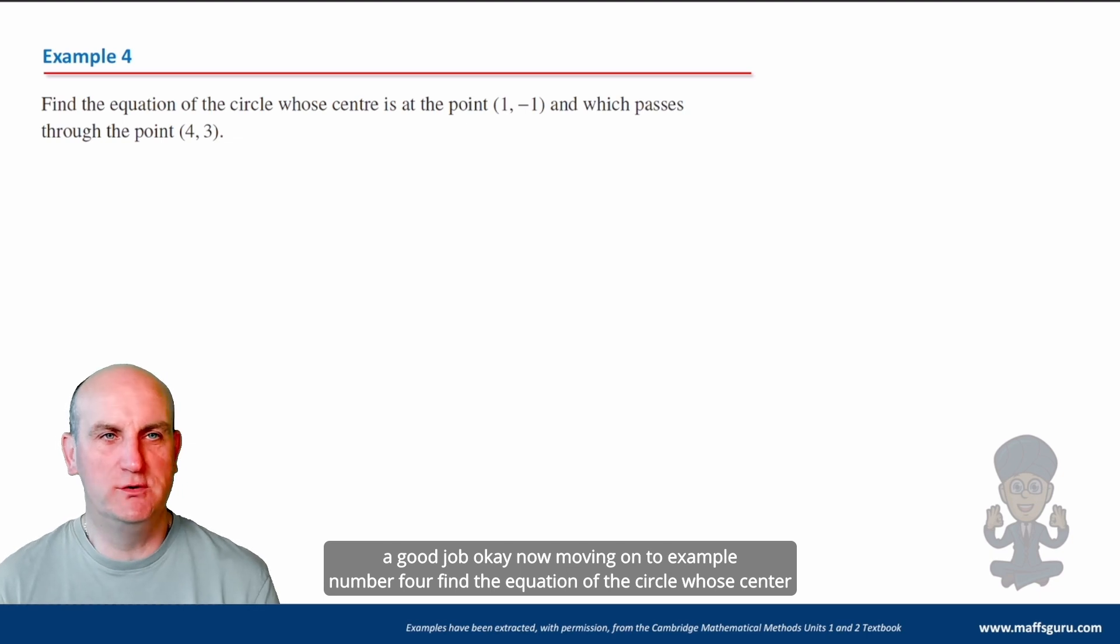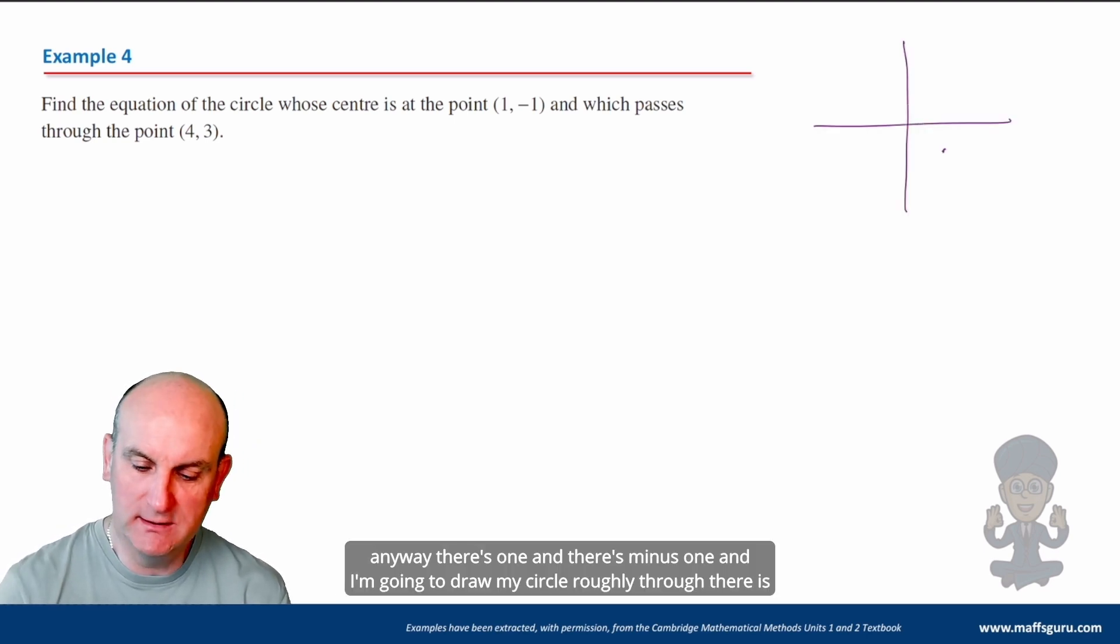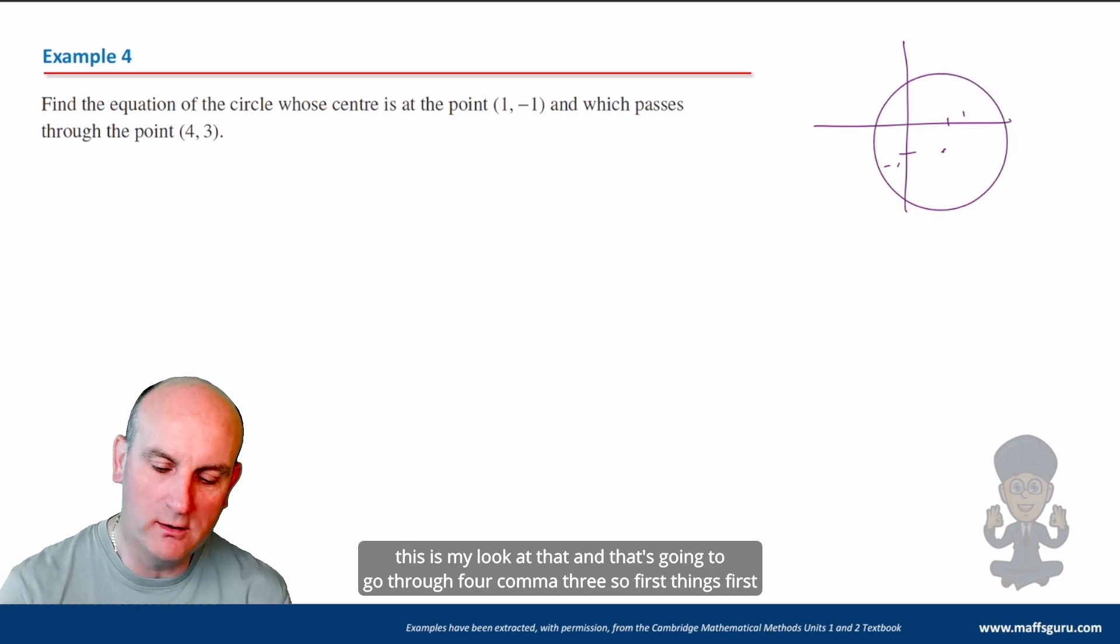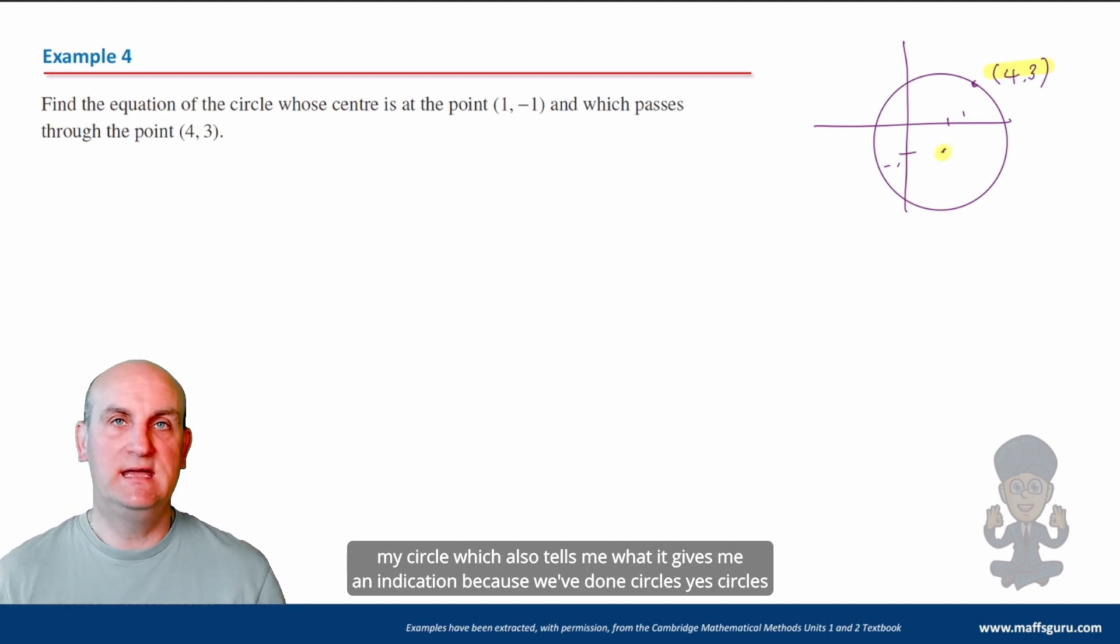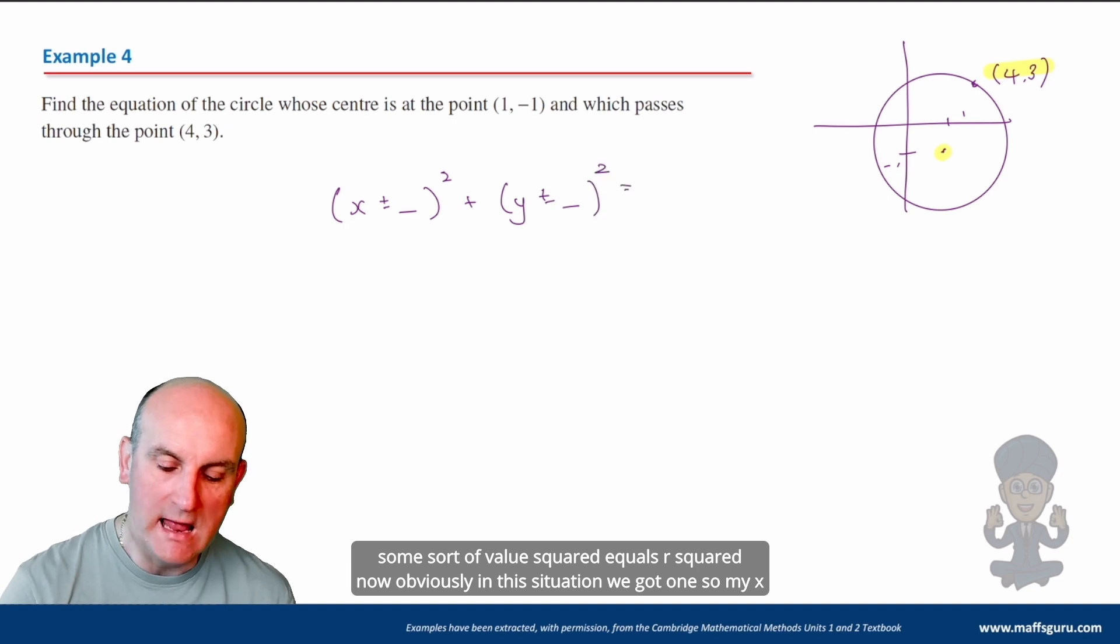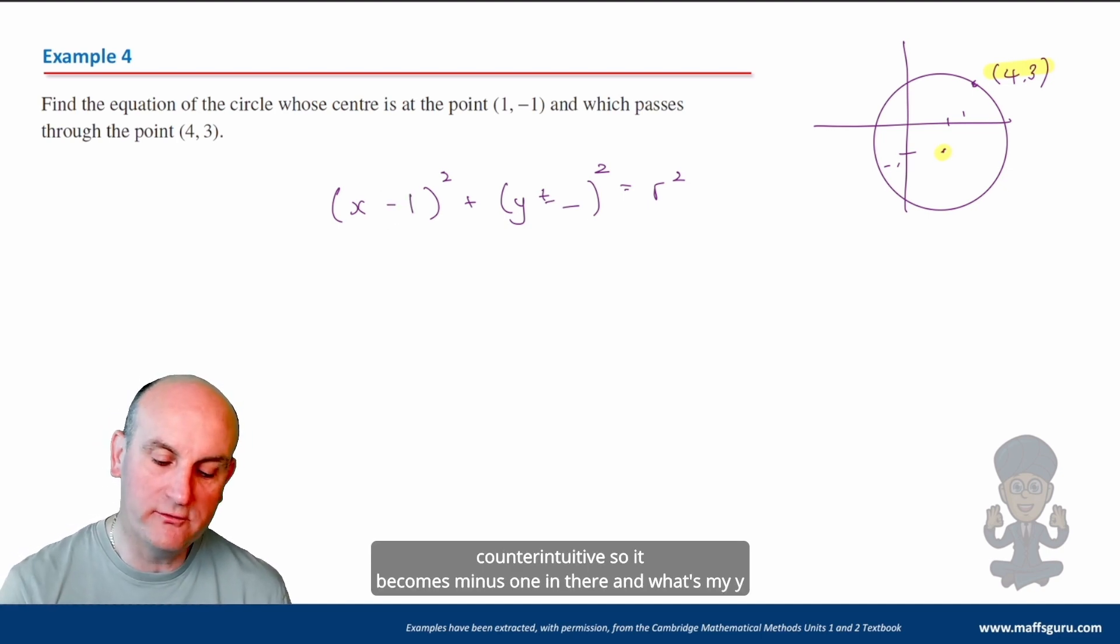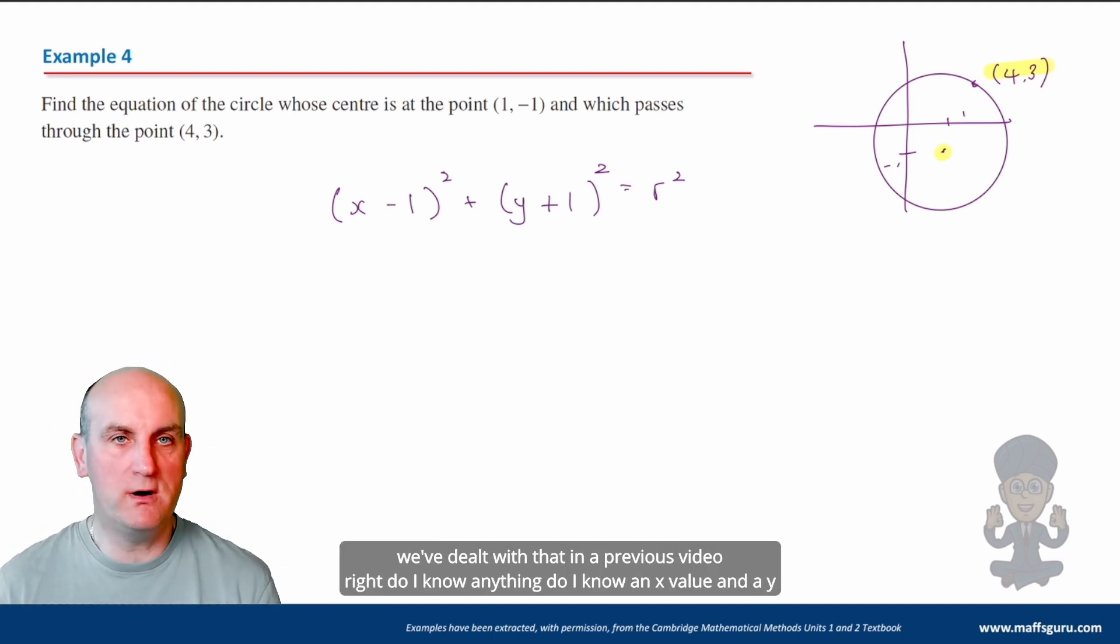Now moving on to example number four. Find the equation of the circle whose center is at the point (1, -1) and which passes through the point (4, 3). Okay. So what I was taught when I was at school, and you would argue I'm still at school because I'm a teacher. But anyway, there's one and there's minus one. And I'm going to draw my circle roughly through there. That's my, oh, look at that. And that's going to go through four comma three. So first things first, what have I got? I've got a coordinate. Yay. So I've got an x value and a y value. I've got a center of my circle, which also tells me what it gives me an indication because we've done circles. Yes, circles. So I know now that I have (x ± value)² + (y ± value)² equals r². Now, obviously in this situation, we got one. So my x value is plus one. So I know that's counter intuitive. So that becomes minus one in there. And what's my y value? It's minus one. So I'm going to put plus one in there. OK, so that's the counter intuitive stuff. We've dealt with that in a previous video. Right. Do I know anything? Do I know an x value and a y value? Of course, I know an x value and a y value.